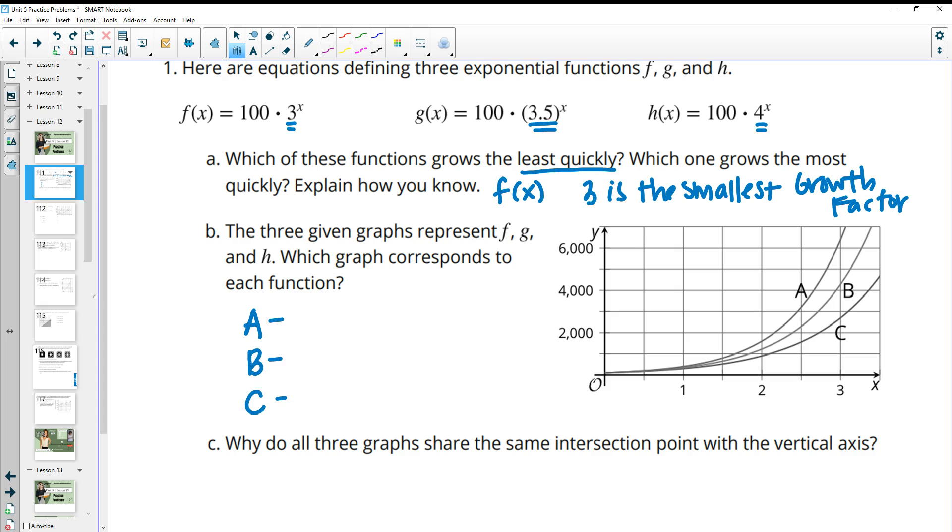When we're talking about growth factor, that means it's going to get the highest, the quickest. So the one that's at the top here is the one that's growing the fastest. So a is growing the fastest, meaning it needs to have the largest growth factor. So a is going to be h(x).